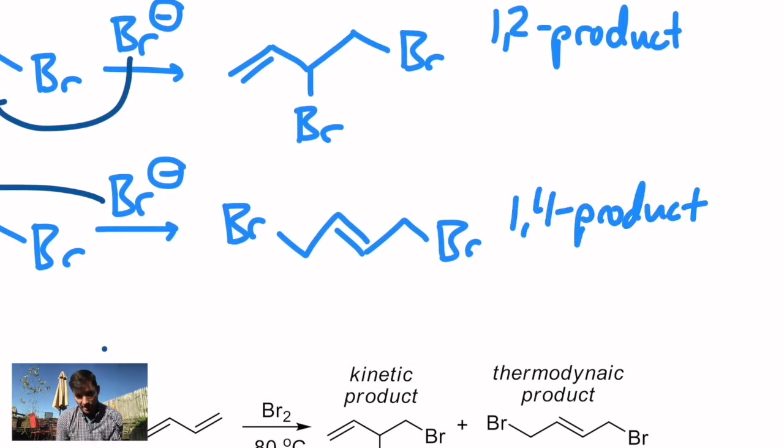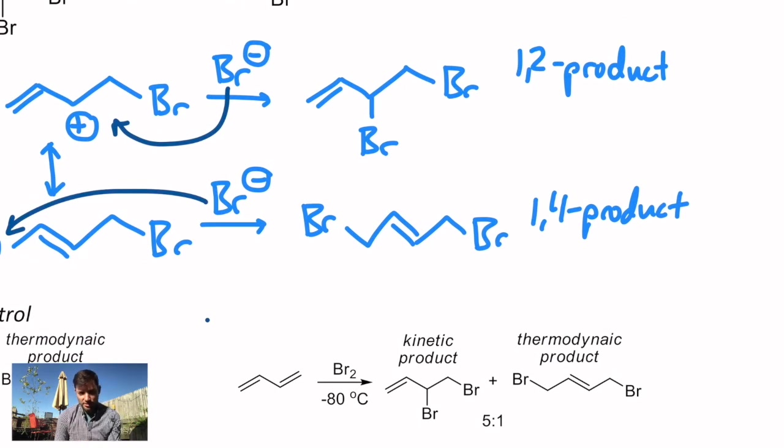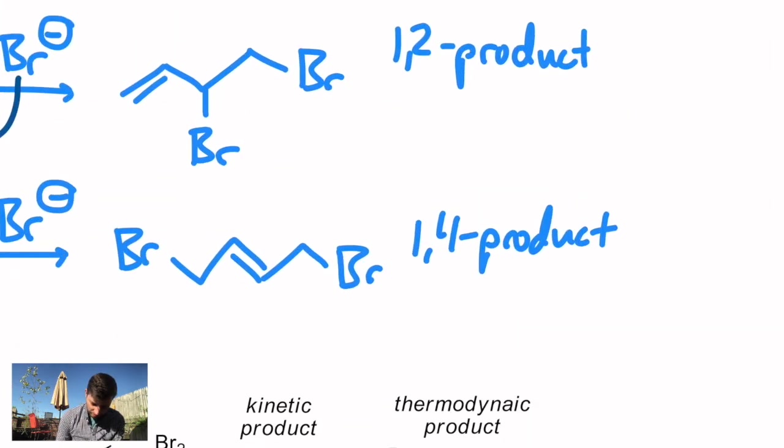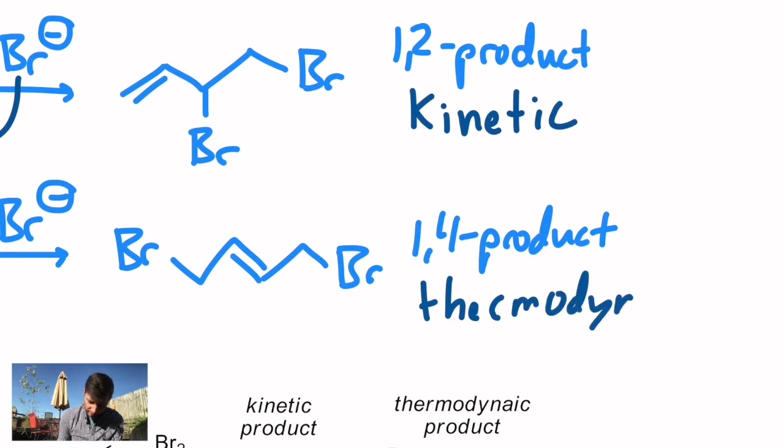So that just explains why we get those two. I want to go one step further and talk about how we can control the outcome. How can you get one over the other? And it turns out you can. It's just by controlling the temperature, because the first product is what we call the kinetic product, and the second one is the thermodynamic product. Thermodynamic we usually use to mean the more stable product, so the one that's lower in energy. The kinetic product is usually the one that forms faster.